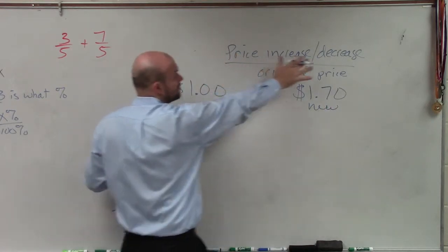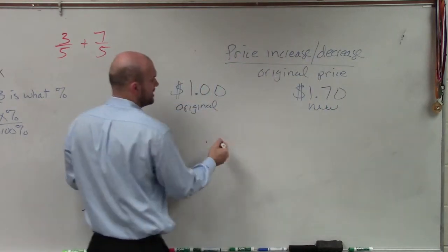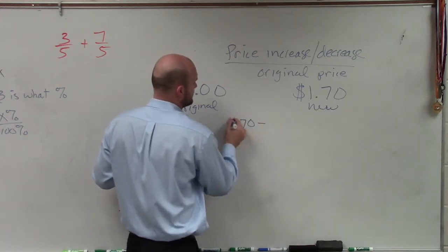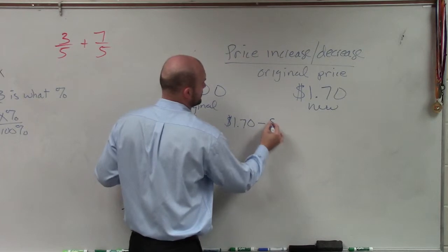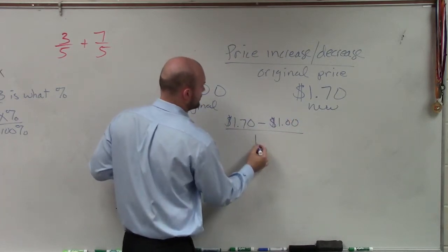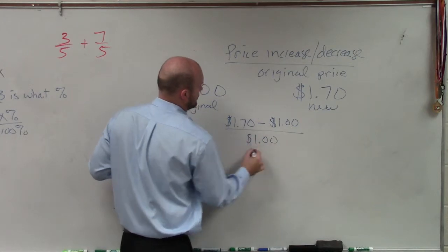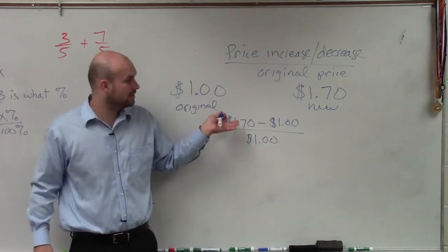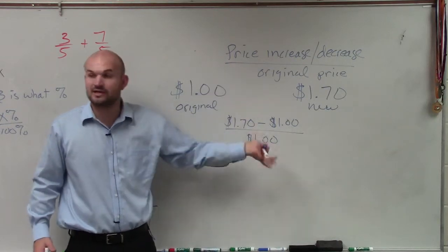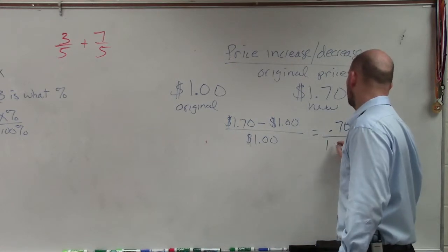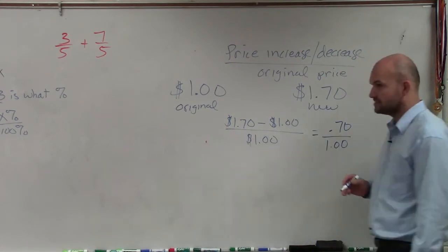So you just want to find what the increase is over the original price. So to find the increase, I do $1.70 minus $1 all over $1. So just determine what the difference is between the original and the new. It can be either increase or decrease. And what you're going to get is 0.7 over 1.00.